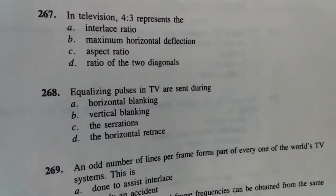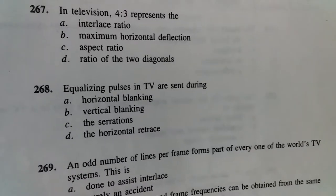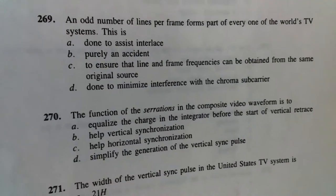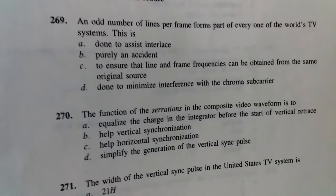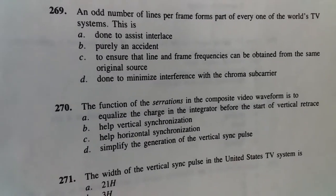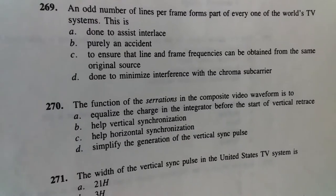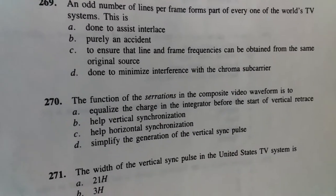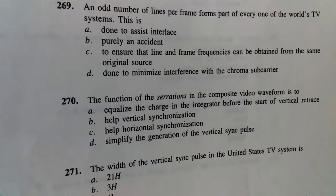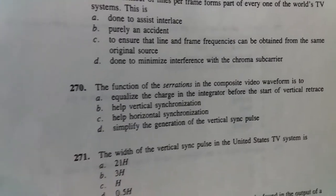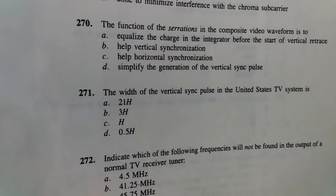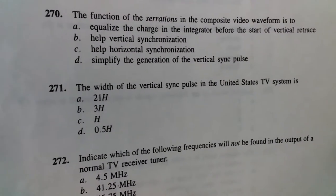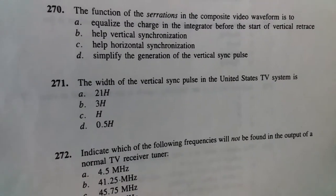Equalizing pulses in TV are sent during vertical blanking. An odd number of lines per frame forms part of every one of the world's TV systems. This is done to assist interlace. The function of serrations in the composite video waveform is to help horizontal synchronization.